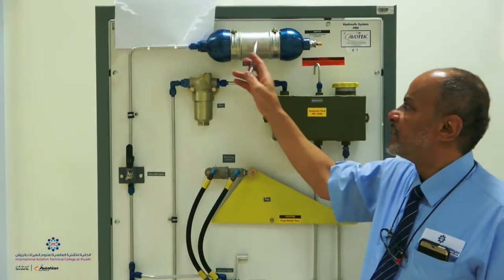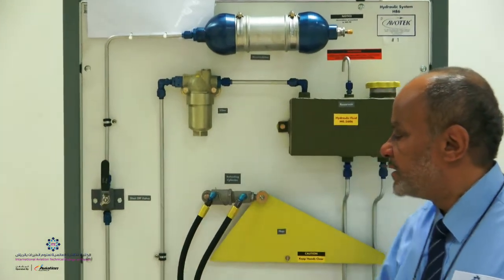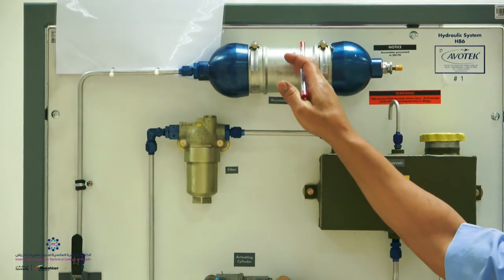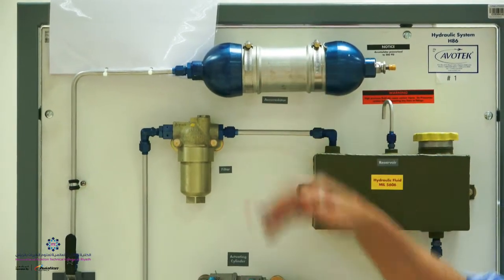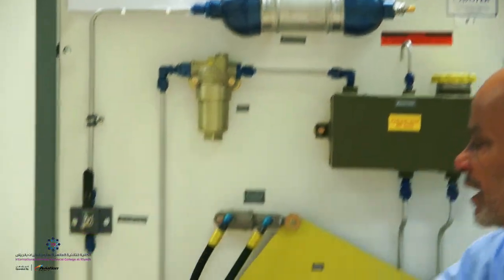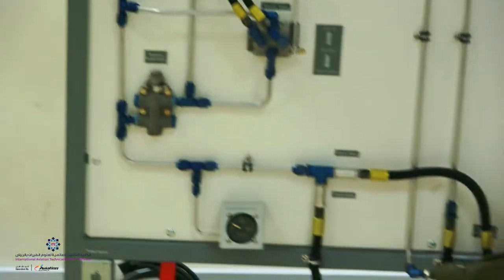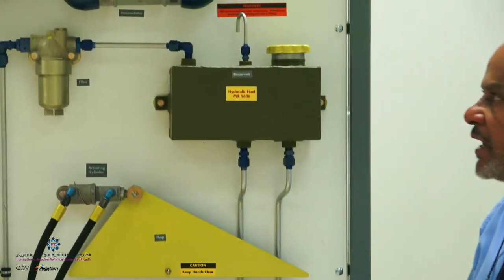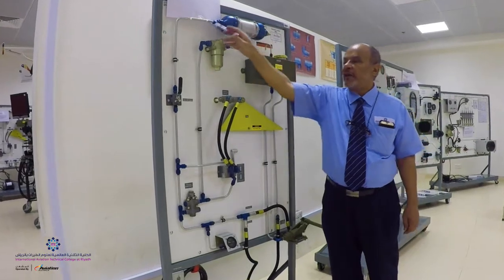And the purpose of the accumulator, one of the purposes is to prevent system surges by compressing the gas within and maintaining the pressure. The second purpose is to supply the system in case of failure, in emergency, and usually systems such as brakes are supplied by the accumulator.